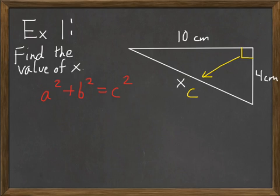That means I can put X in for C, and so that would be equals X squared. The legs are the 4 and the 10, so I'll plug those in for A and B. So we have 4 squared plus 10 squared equals X squared. Now my task is just to solve this equation.